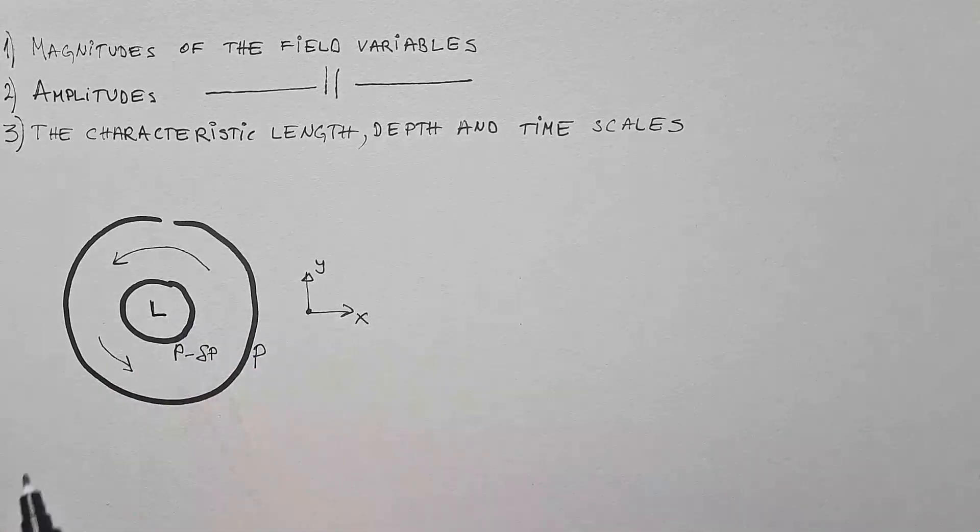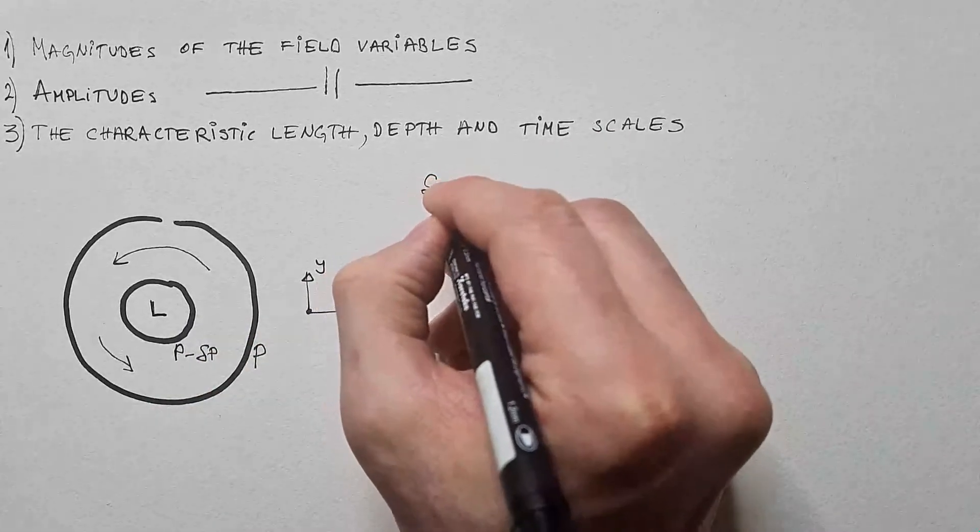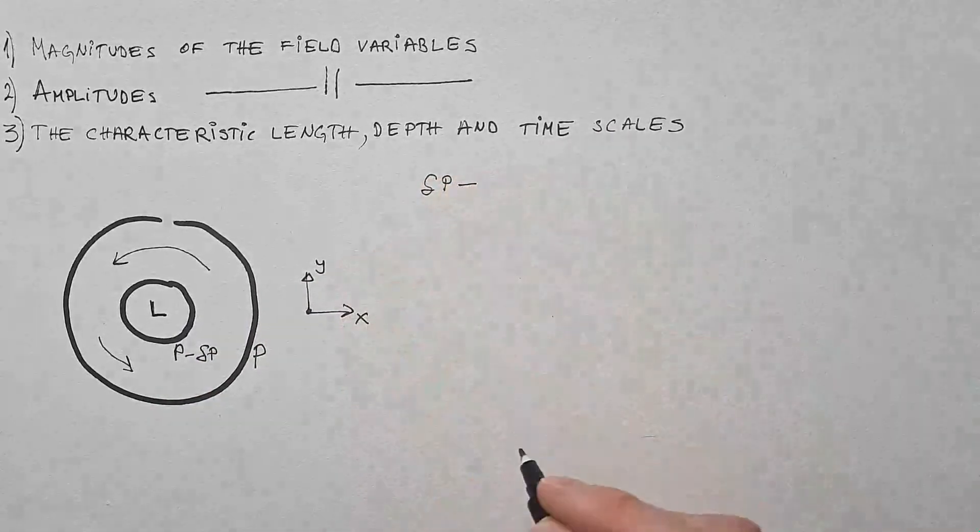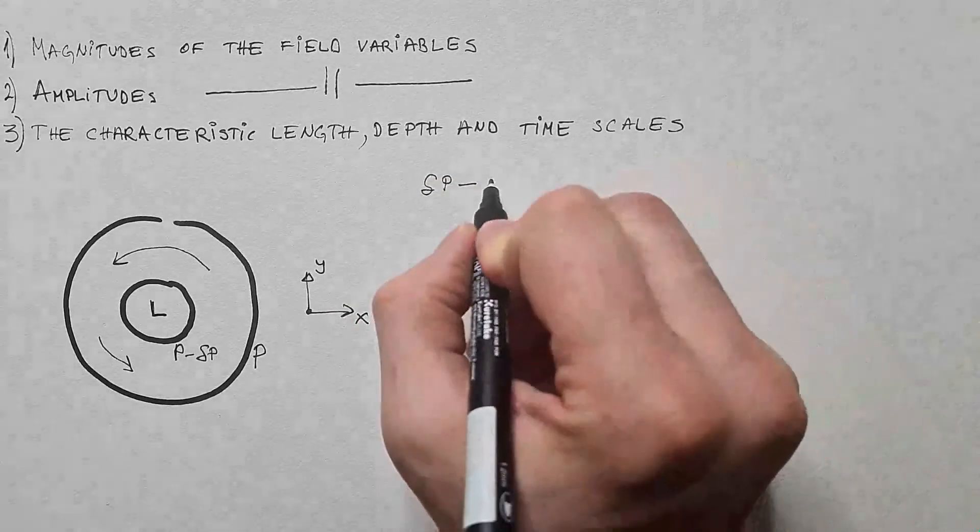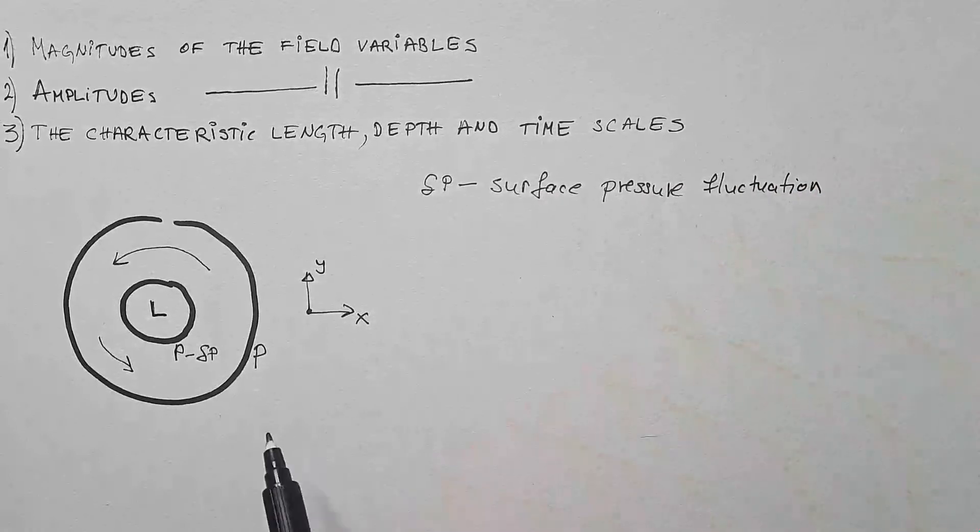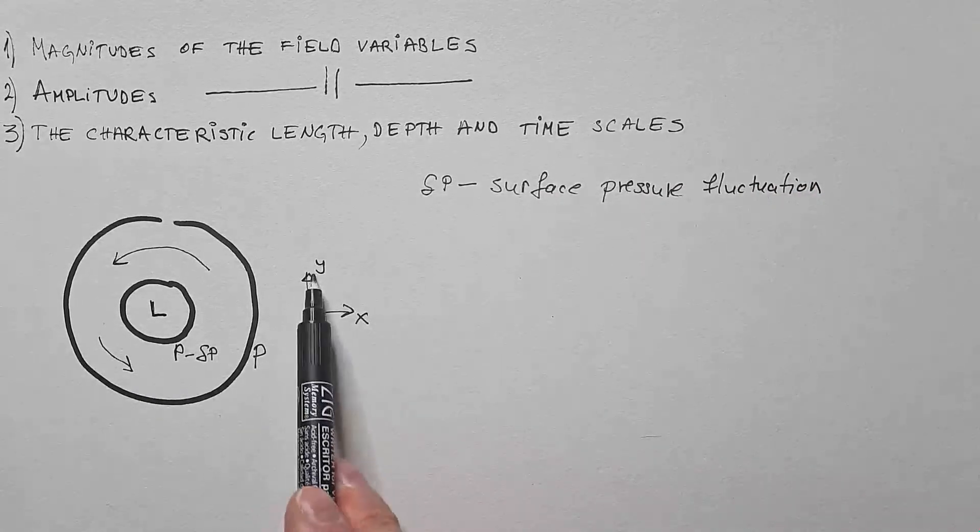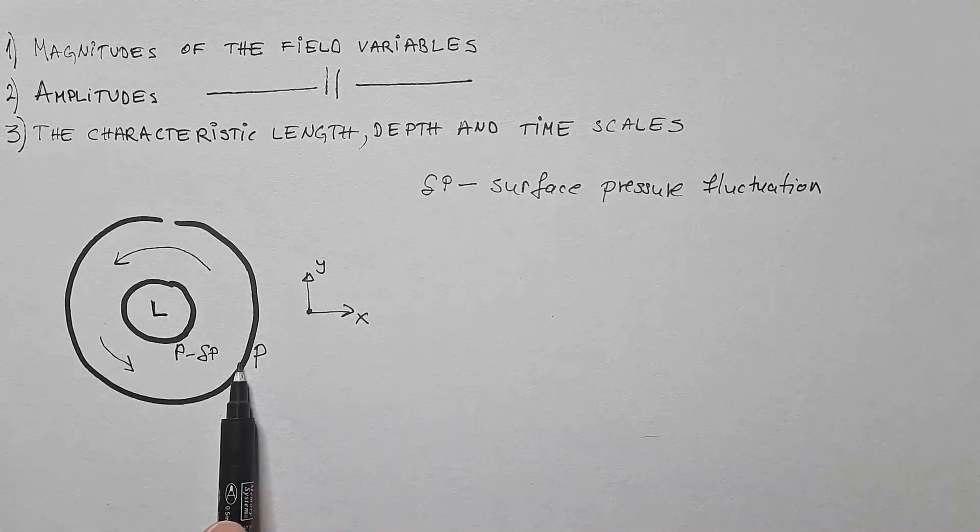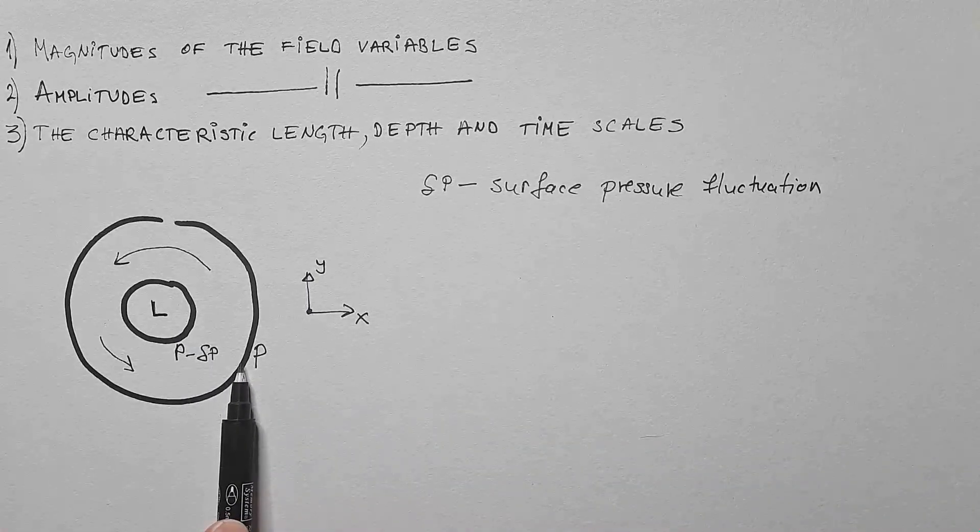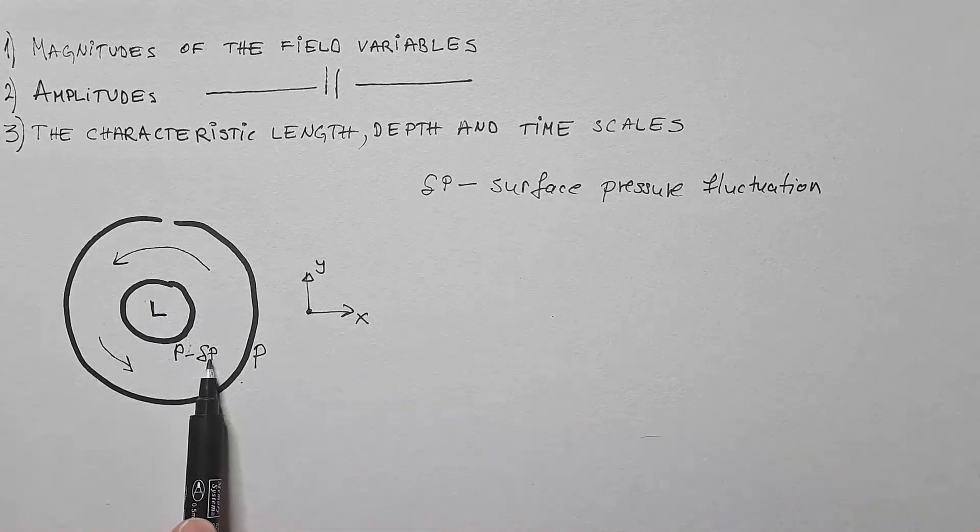So for this cyclone, this delta P is the surface pressure fluctuation. Namely, pressure in the x and y directions fluctuates such that if here we have pressure P, then the mean pressure over here is P minus delta P.